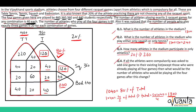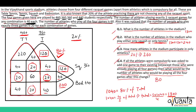The last question is: if all athletes were compulsorily asked to add one game to their existing list, except those already playing all four games, then what would be the number of athletes playing all four games after this change? All athletes playing exactly three games just have to add one game, so they will all be playing four games. There are 20, 20, 20, 20 — 80 more athletes now playing all four games, plus the 60 already playing all four. So 80 plus 60 means the new number of athletes playing all four games is 140.